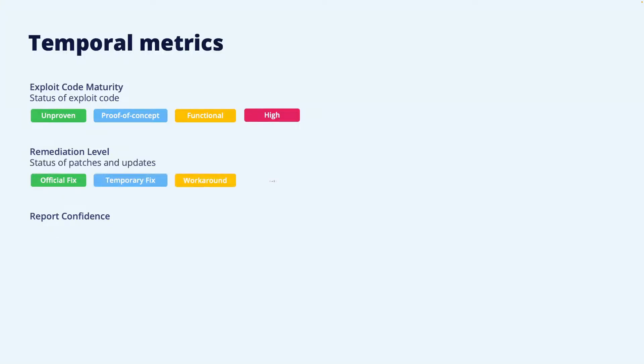The remediation level is used to define the availability of a fix. This ranges from unavailable, meaning there is no solution to the vulnerability, to official fix, where the vendor has issued an official patch. Between these two values, there could be a workaround available — an unofficial, non-vendor solution — and a temporary fix, which is a vendor-released fix that can be used until an official fix is available. An unavailable remediation results in higher severity.